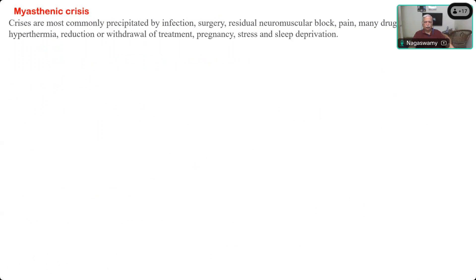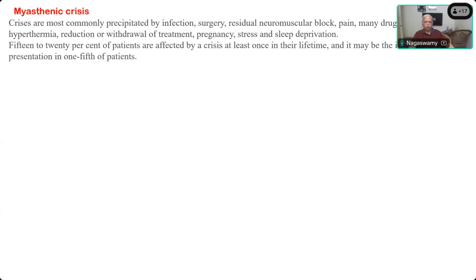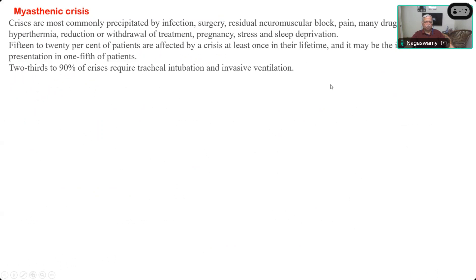Myasthenic crisis can be triggered by infection, surgery, residual neuromuscular blockade, pain, or withdrawal of medication. These things lead to myasthenic crisis, which involves a lack of acetylcholine. 15 to 20 percent of patients are affected at least once in their lifetime, and 23 to 90 percent of crises require intubation and ventilation. You must ask in the history whether the patient has already been hospitalized because of the disease.